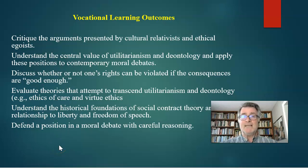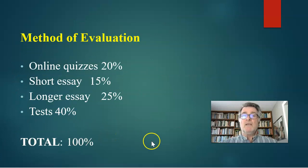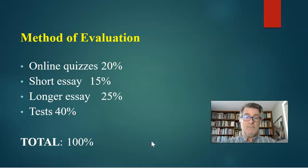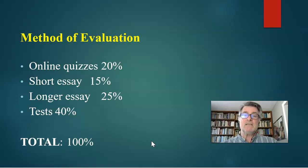That is the list of vocational learning outcomes. Don't worry if they don't make sense right now — we'll be using these things weekly in our modules, discussions, quizzes, papers, and so on. The method of evaluation is pretty straightforward: there will be online quizzes, a short essay worth 15%, a longer essay worth 25%, and two tests — a midterm and a final. I don't like to call them exams, as that causes fear. The first test will cover the first half of the course and the second test simply the second half.